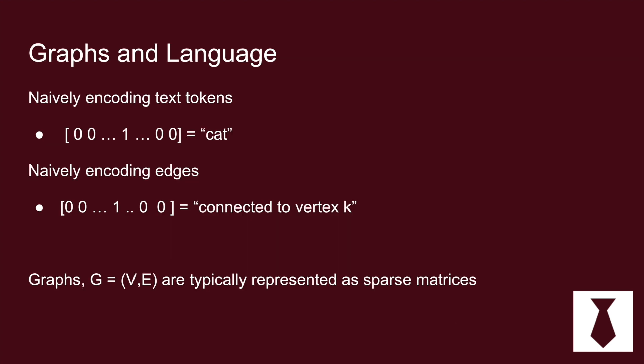The idea behind DeepWalk is to use some of the advances in language modeling to do graph modeling. So the way that this works is in language models you have text tokens which could be represented as these one-hot encoded vectors that would have a zero for every single word in the vocabulary and then a one for the word you're trying to represent.